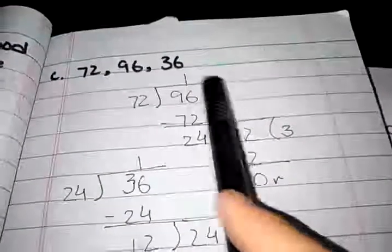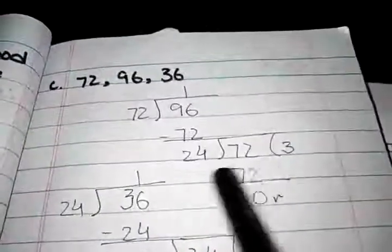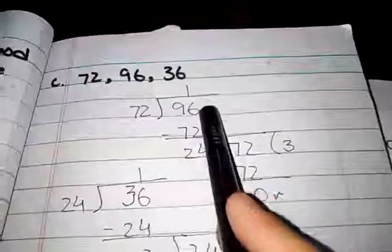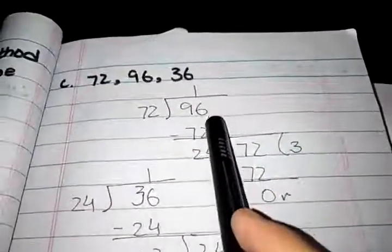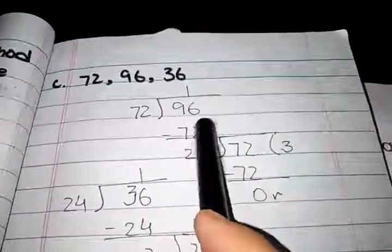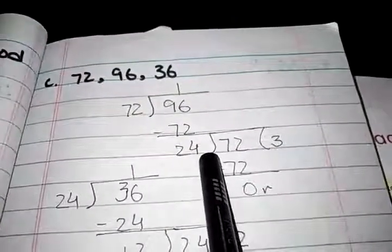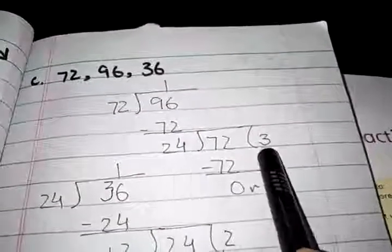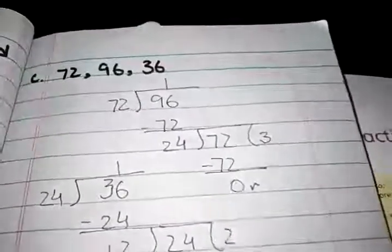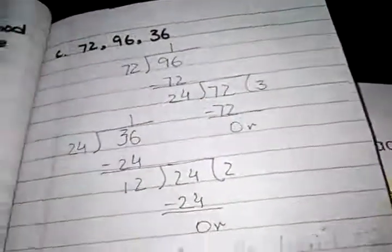Question C is 72, 96, 36. First of all we divide 72 on 96. 72 ones are 72. After subtraction, 24 is left. The next dividend is 72. 24 threes are 72. Then we divide 24 on 36.